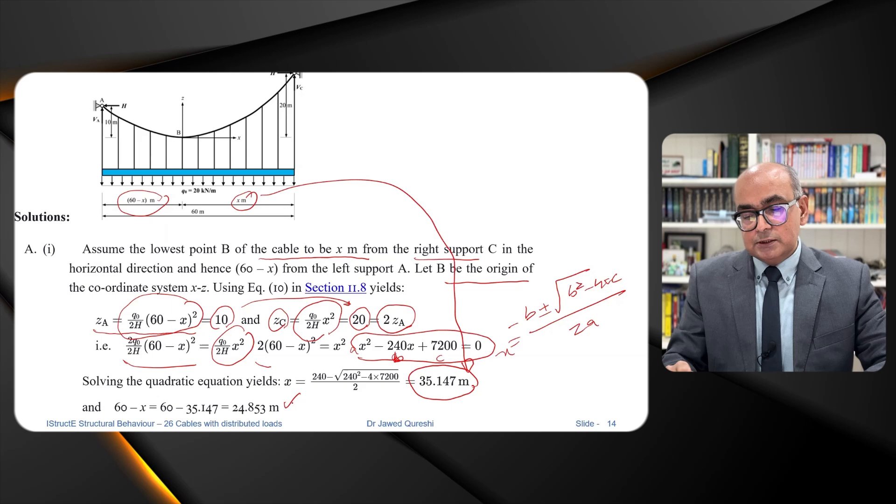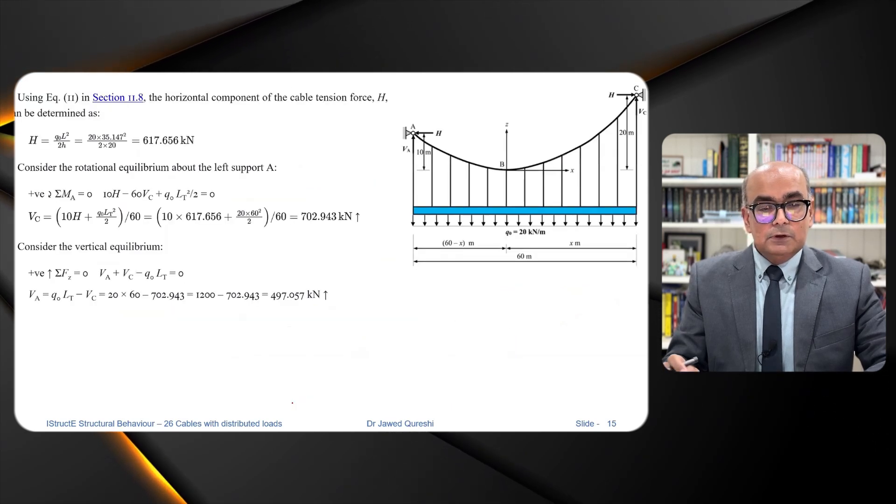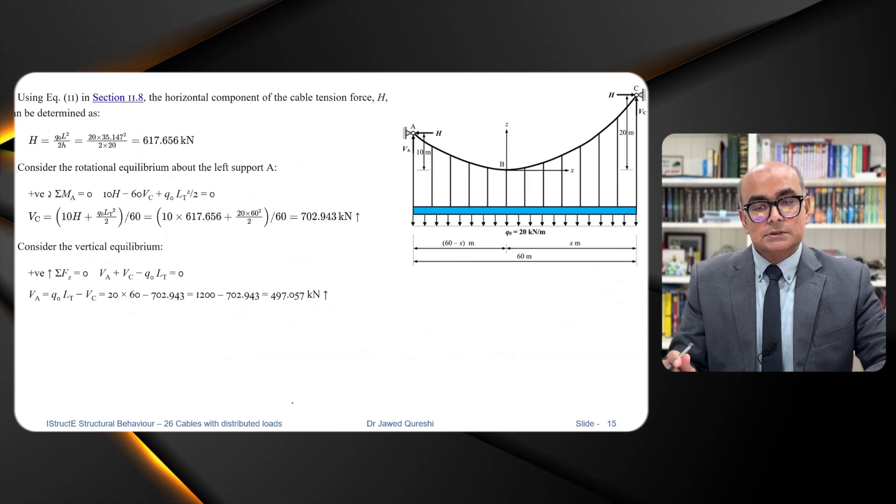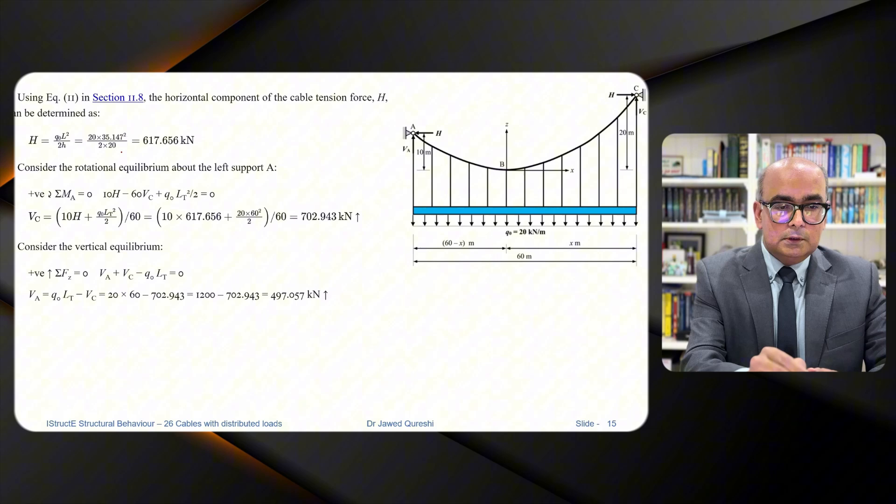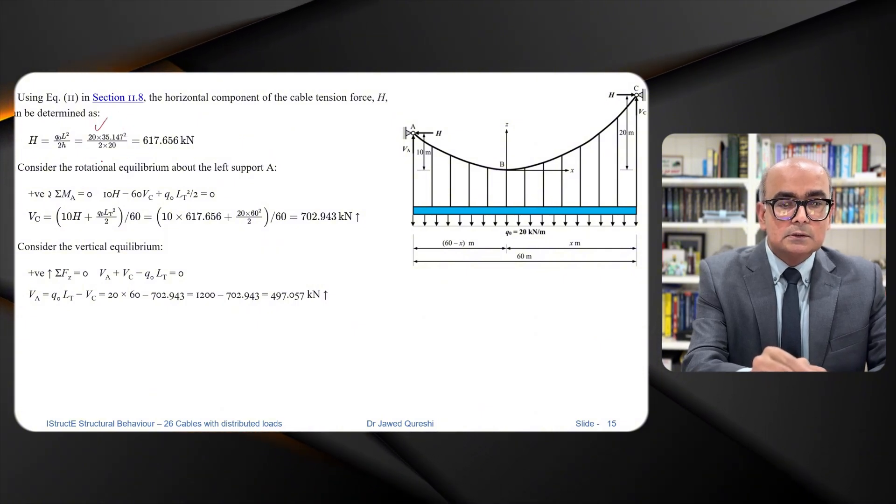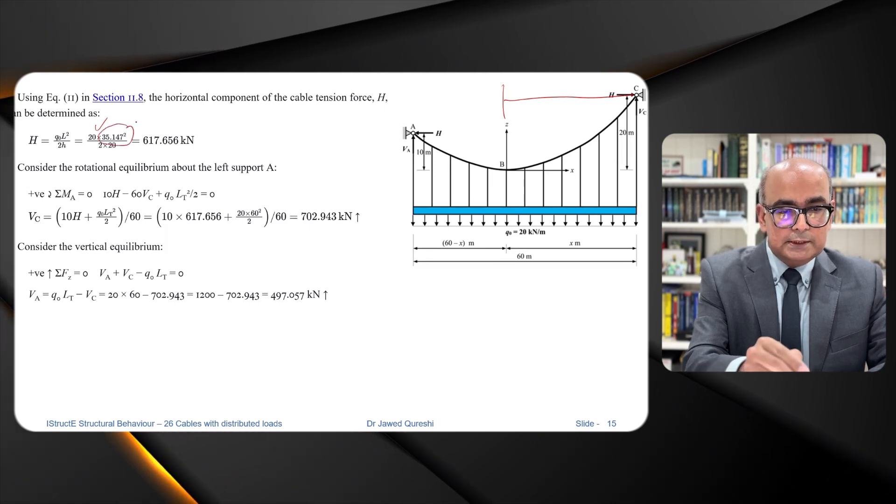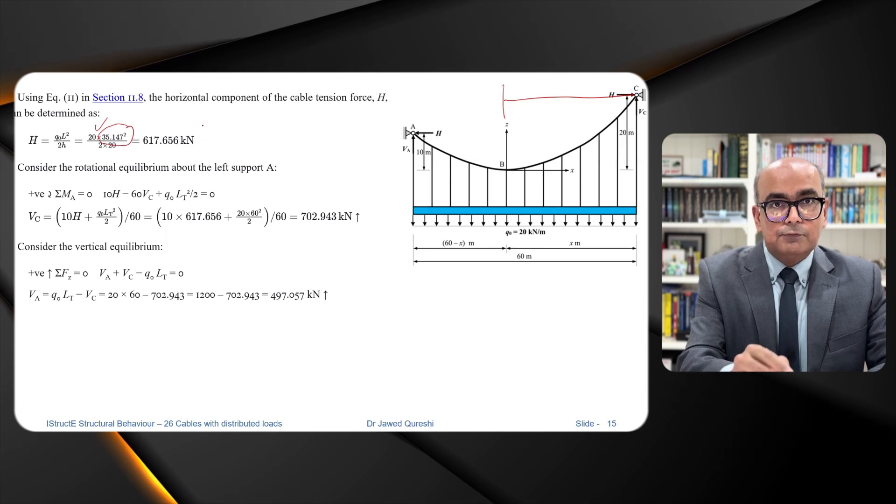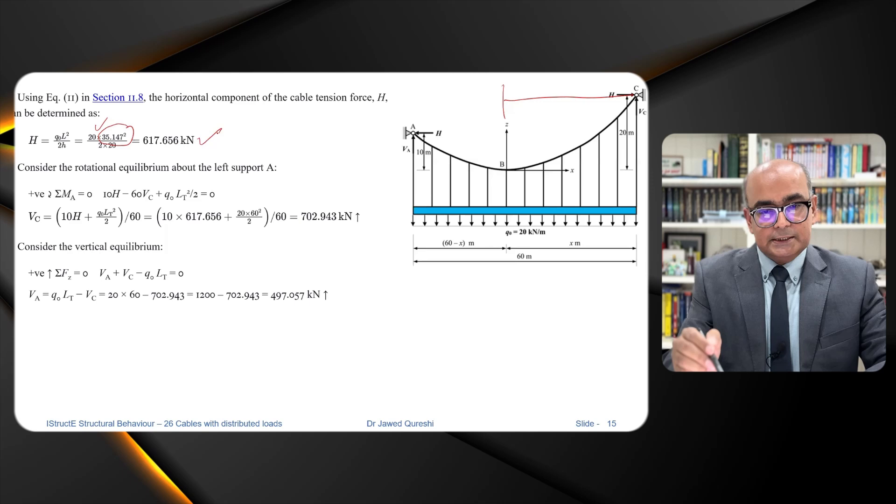And the formula is Q naught L square over 2H. Q naught is 20. L is we're simply taking the right side. So that's why L is 35.147 square. From here we can get value of H.